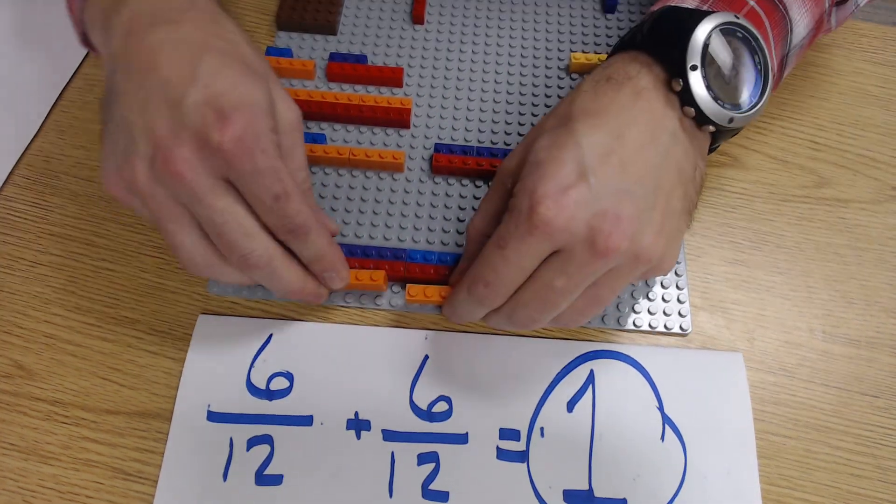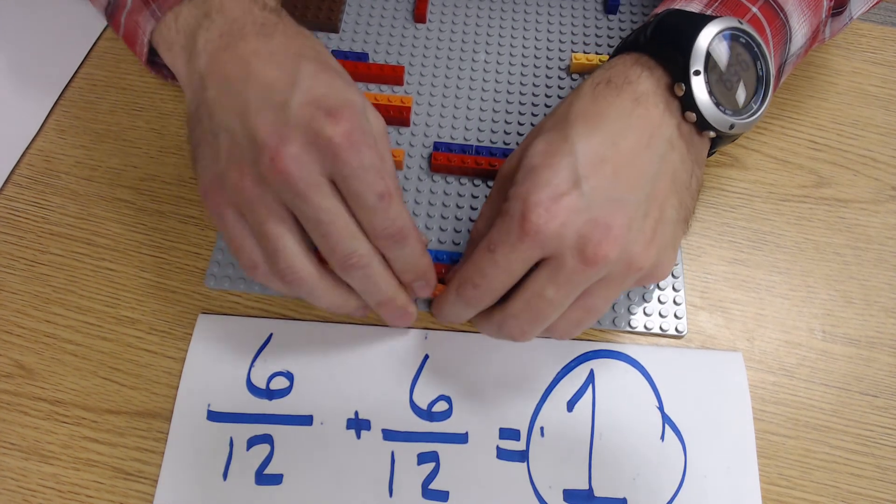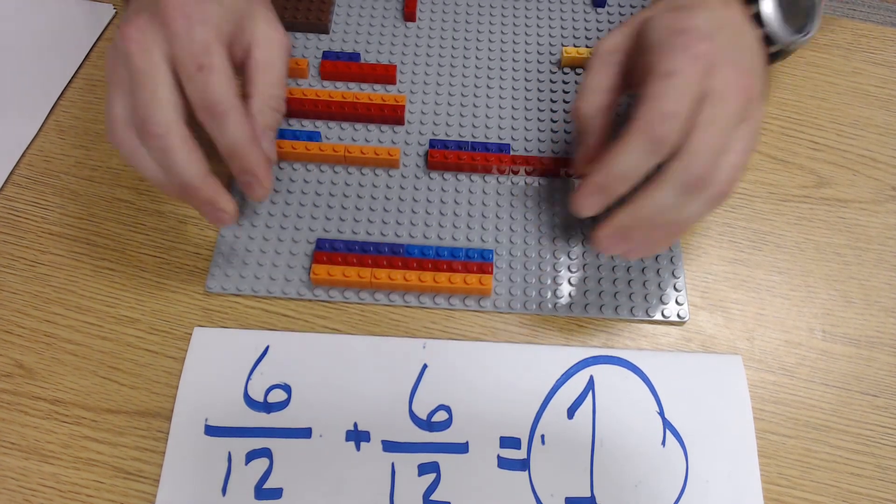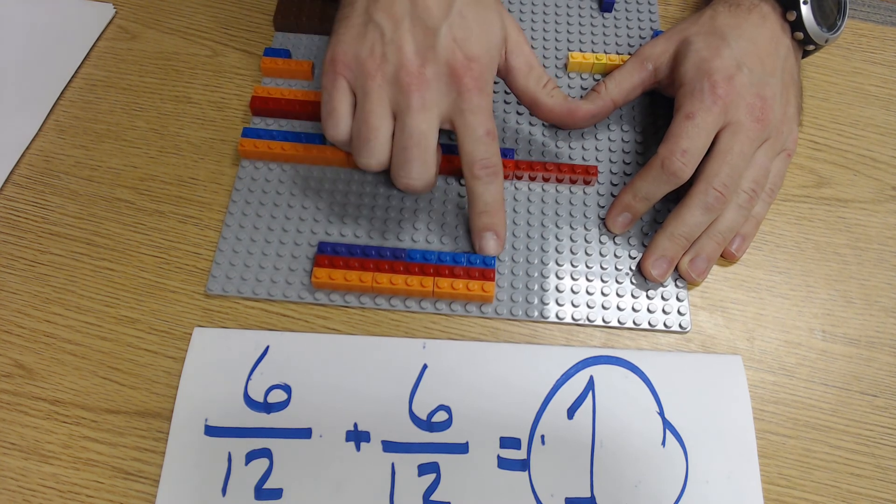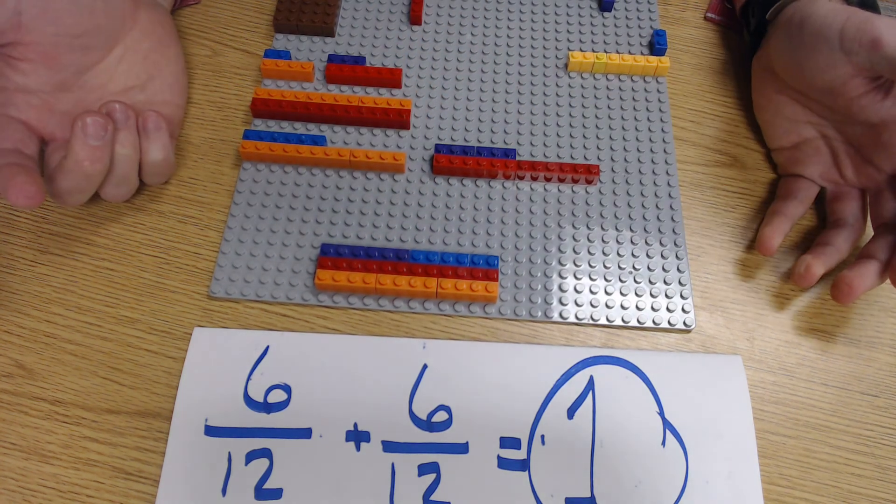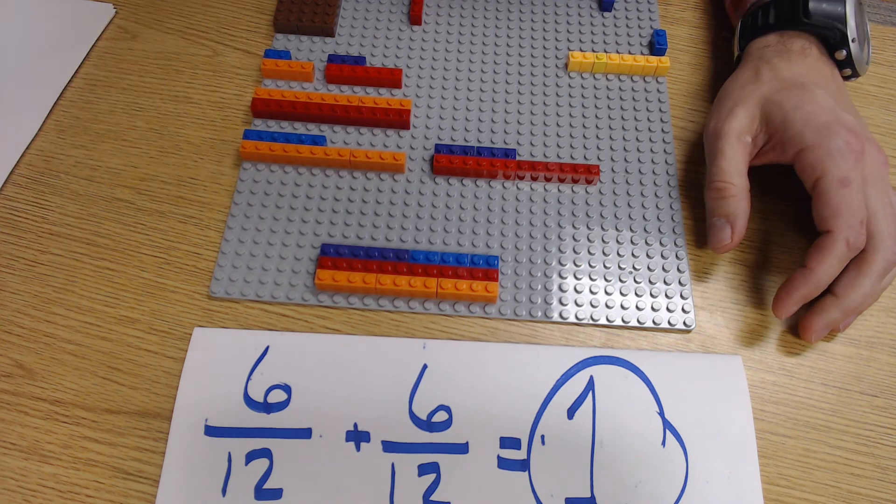If you want to have them build them all on top of each other like this to kind of see that, yes, we've multiplied everything, but yes, there's our twelfths, there's our twelfths. And I add up all of our twelfths, we get 12 twelfths, which equal one whole.